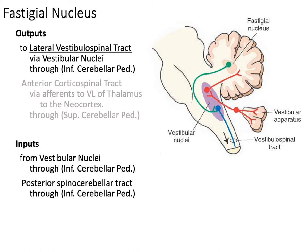Now we're just going to review the nuclei associated with the tracts, to really drive home the outputs and inputs. The fastigial nucleus is responsible for postural adjustment and associated with the vermis. Its output is the lateral vestibulospinal tract via the vestibular nuclei, which have efferents going down the vestibulospinal tract to help with core balance. The inputs for the fastigial nucleus are the vestibular nuclei and the posterior spinal cerebellar tracts, which provide information to the cerebellum regarding your core balance.